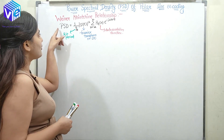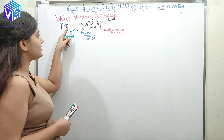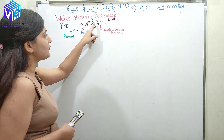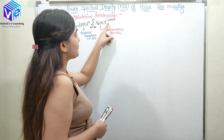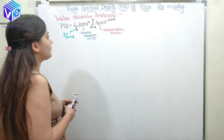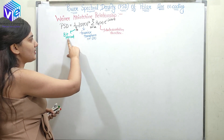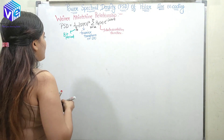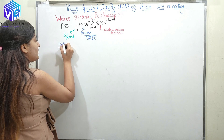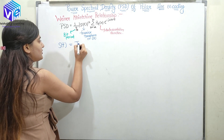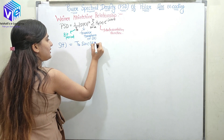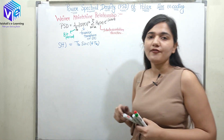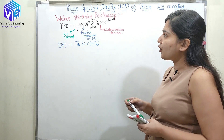If I talk about the power spectral density, I'll be using again the Wiener-Kinchen relationship. According to the Wiener-Kinchen relationship, the power spectral density is equal to (1/T_b) · |S(f)|² · summation from n = −∞ to ∞ of r(τ,n) · e^(−j2πfτ), where S(f) is the Fourier transform, T_b is the bit period, and r(τ) is the autocorrelation function.